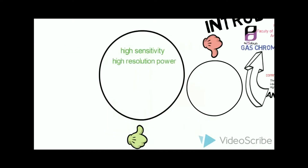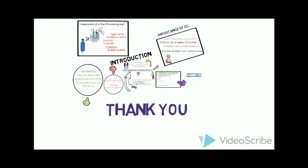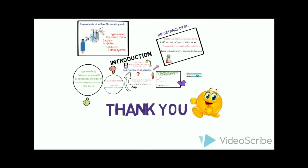The advantages of GC include high sensitivity, high resolution power, good accuracy and precision, the ability to separate samples with less quantity, and it is very quick. On the other hand, the disadvantages are that it is only suitable for volatile samples, and the sample must be thermally stable. Thank you, keep watching.